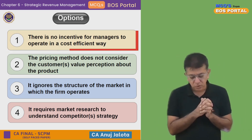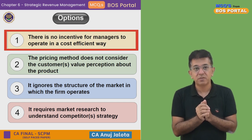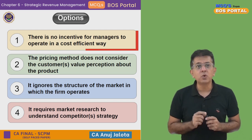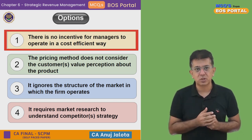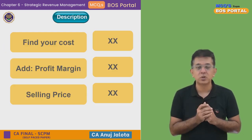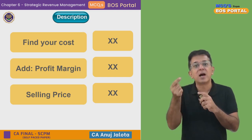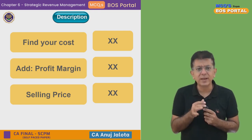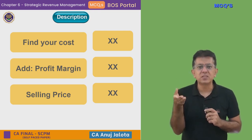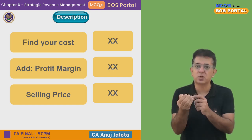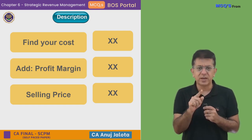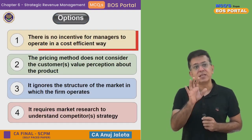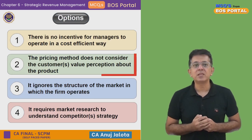Option 1: There is no incentive for the manager to operate in a cost-efficient way. This is clearly a drawback. If your cost is higher, it doesn't really matter because it gets passed on to the customer. The manager has no incentive to control cost, since any extra cost he incurs will ultimately get absorbed by the consumer.